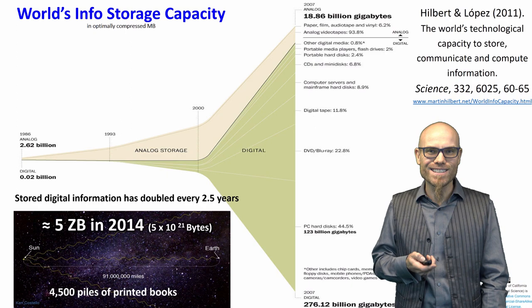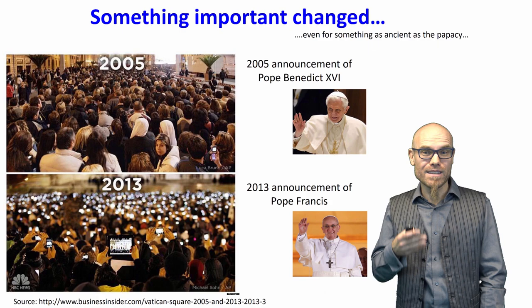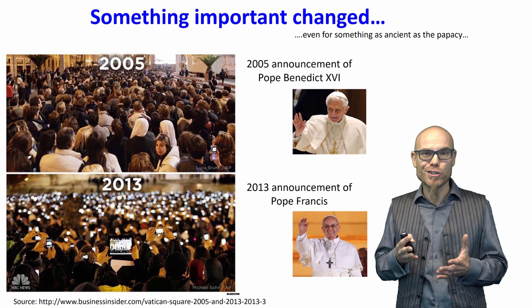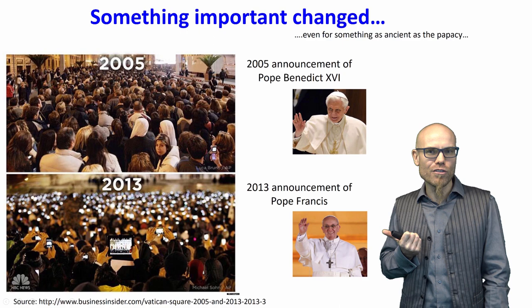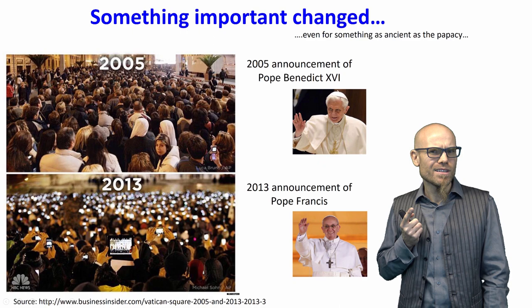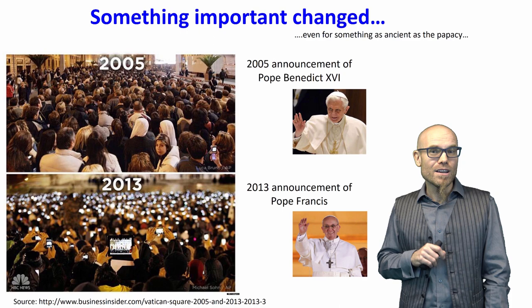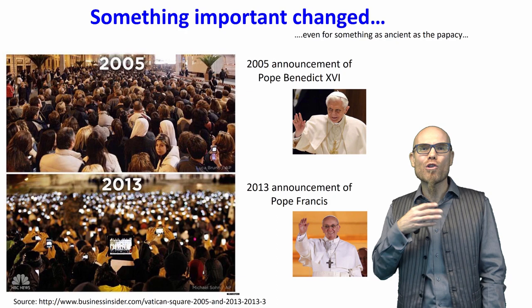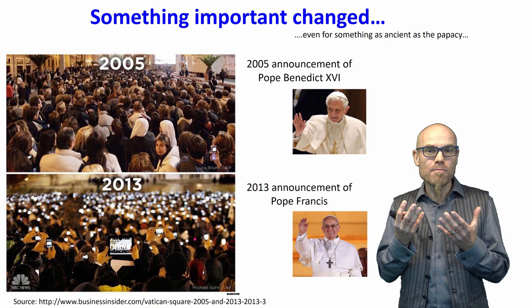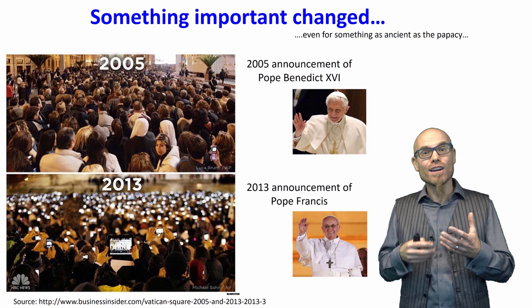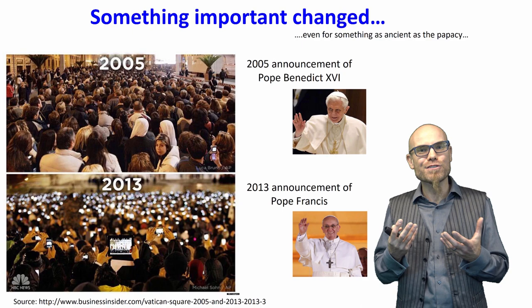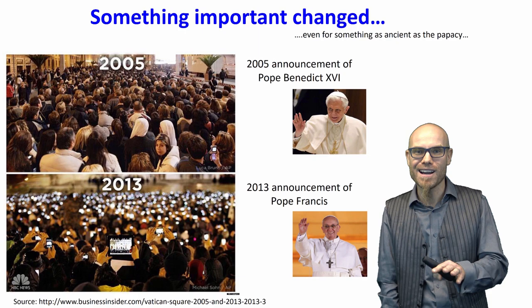Society is producing a lot of this information all the time, and even the most ancient things in society are being transformed. For example, the papacy — the Catholic pope, a thousand-year-old tradition. The upper image shows the inauguration of Pope Benedict in 2005; the lower image shows the inauguration of Pope Francis in 2013, only eight years later. Something changed: we are all social scientists now. We take pictures and record social reality all the time — we're sharing them, getting feedback, trying to analyze social activities with our phones.